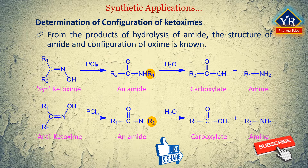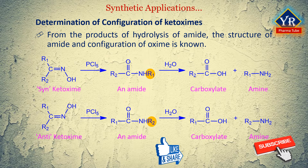It may be stated that R1 is not the same as R2. Thus, the syn-ketoxime under the influence of catalyst — i.e., phosphorus pentachloride — yields an amide which on treatment with a mole of water gives each mole of carboxylate and an amine, thereby showing the critical migration of both R1 and R2 groups.